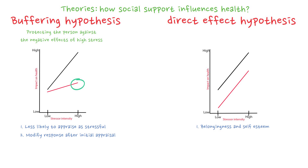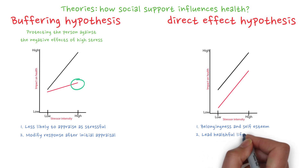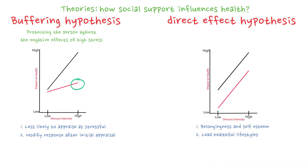Other evidence suggests that high levels of support may encourage people to lead a healthy lifestyle. For example, people with social support may exercise more, eat healthy, drink less, etc., because they feel like others care about them and need them.